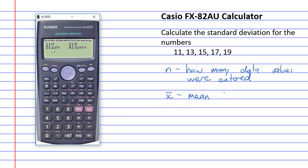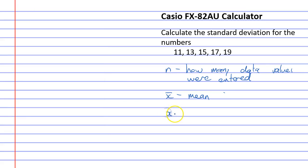And then you have x sigma n and x sigma n minus 1. So, x sigma n is your population standard deviation. And x sigma n minus 1 is your sample standard deviation.